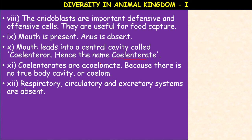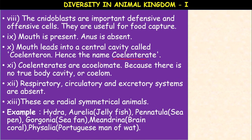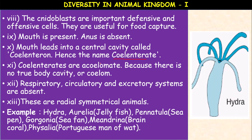All these activities take place through the body surface by means of diffusion. These are radially symmetrical animals. Examples: Hydra, Aurelia (jellyfish), Pennatula (sea pen), Gorgonia (sea fan), Meandrina (brain coral). Corals and coral reefs also come under coelenterates. Physalia is also called the Portuguese man-of-war. These are the examples of cnidaria.